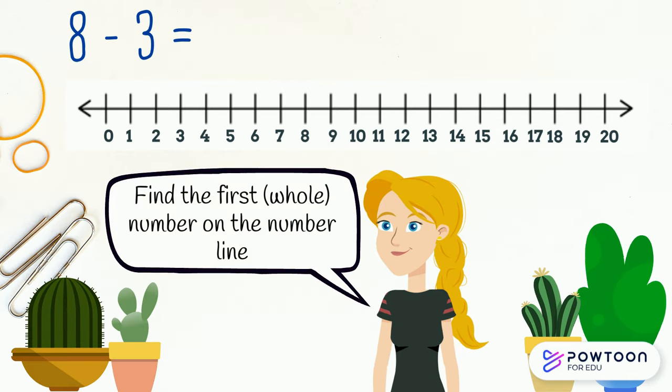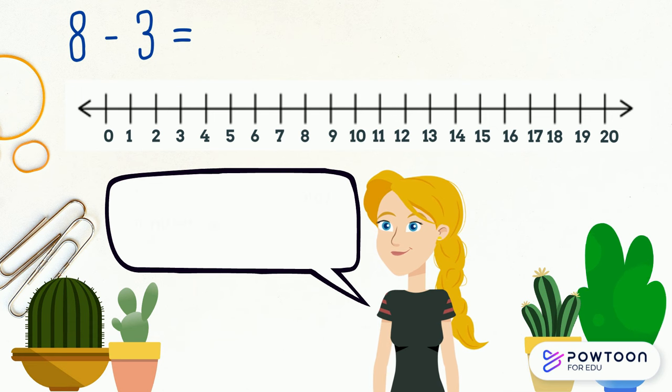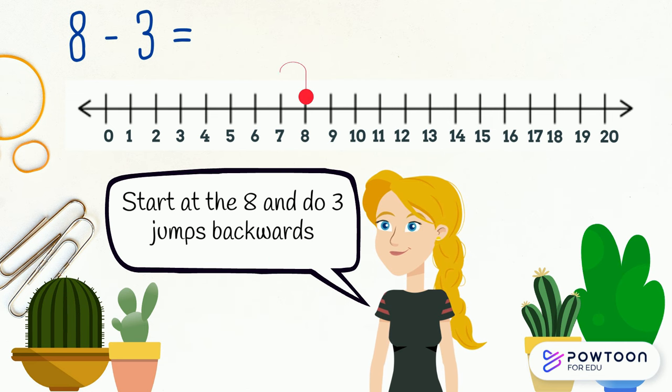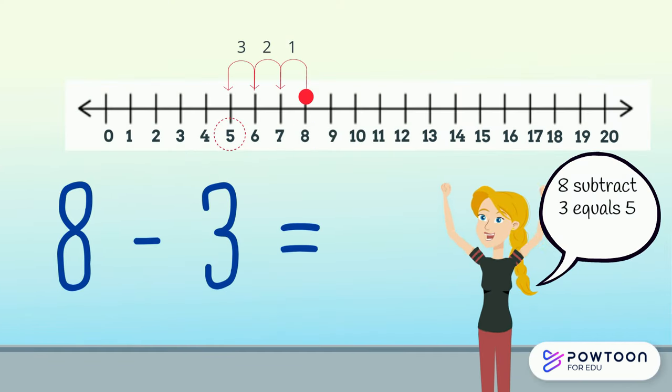Eight take away three. The whole number is eight and we are taking three away. Let's find number eight on the number line and we need to make three jumps backwards. So eight take away three equals five.